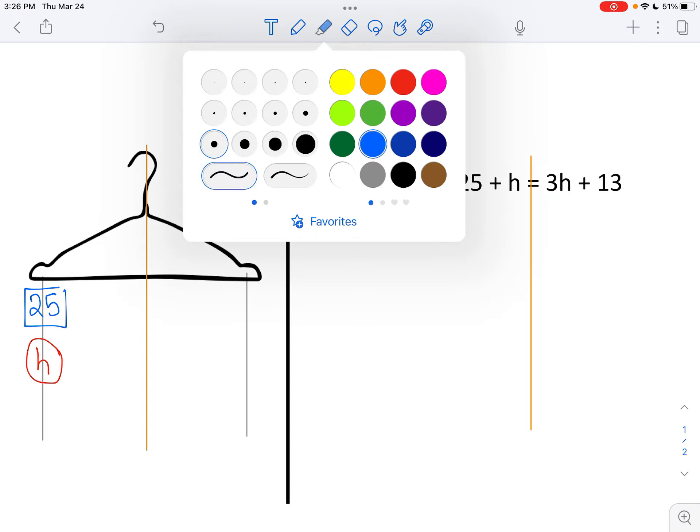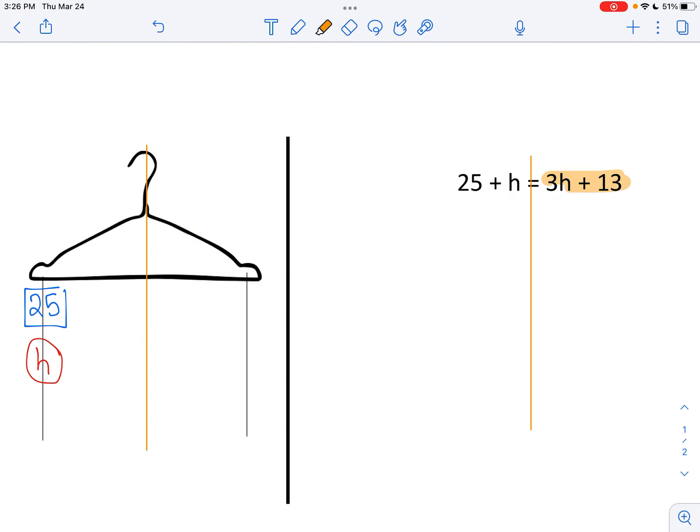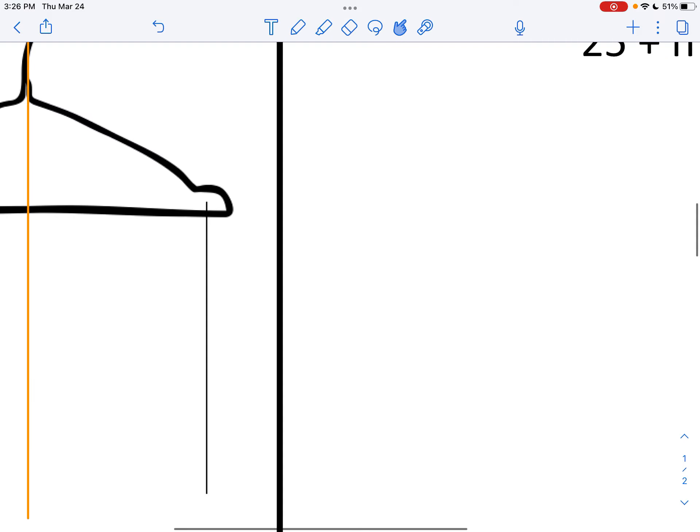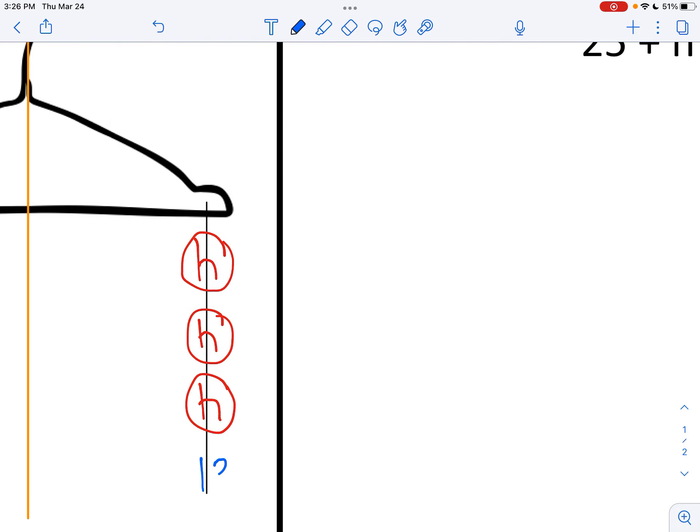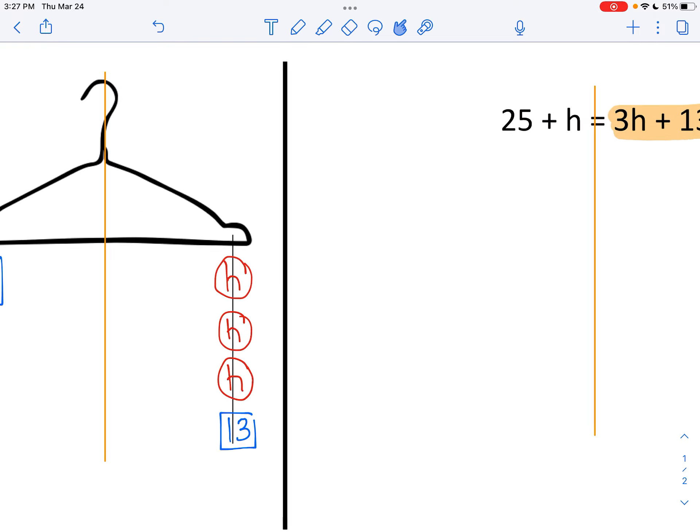There's 25 and an H. On the other side, I see 3H plus 13. So remember, that's not 3 and an H. That's 3 H's. 1, 2, 3. 3 H's and 13.